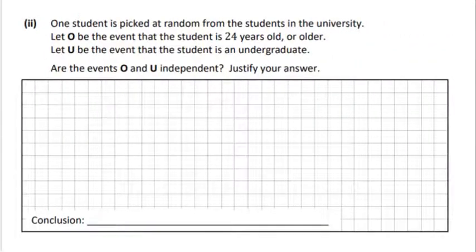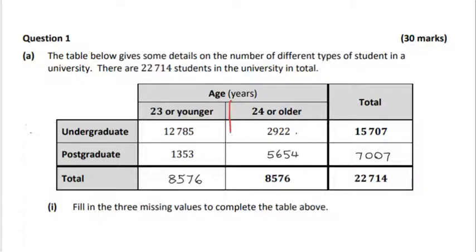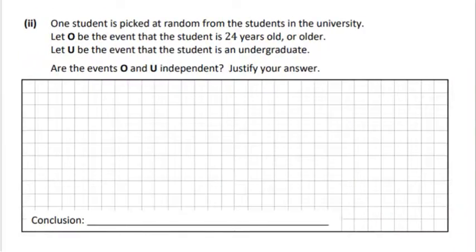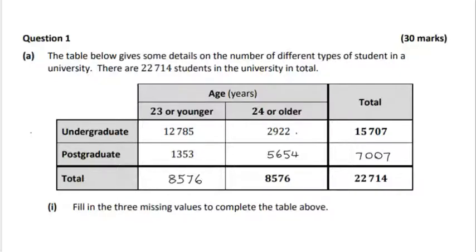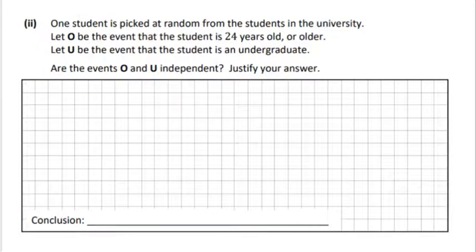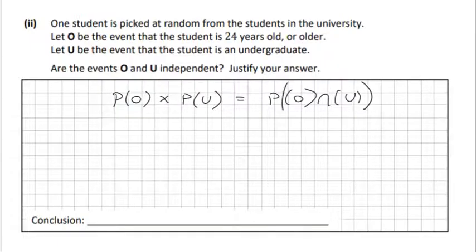One student has picked at random. Let O be the event of students which are 24 years old. So this is the column over here, 24 or older. And the other event is the undergraduate and that's the row which is going across here. So let's write the probability rule for independent sets. The probability of O multiplied by the probability of U is equal to the probability of O intersection U.